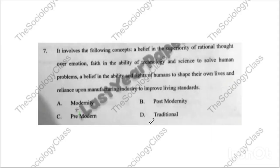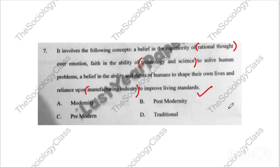Question number seven involves: a belief in superiority of rational thought over emotion, faith in the ability of technology and science, a belief in human ability and rights to shape their own lives, and reliance on manufacturing industry to improve living standards. The options are modernity, post-modernity, pre-modern, or traditional. The correct answer is A — modernity.